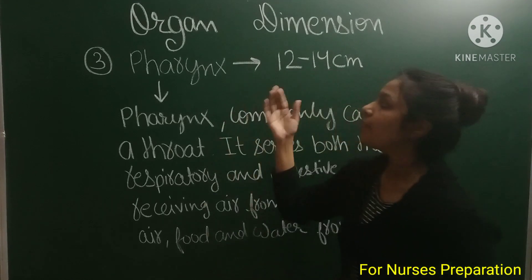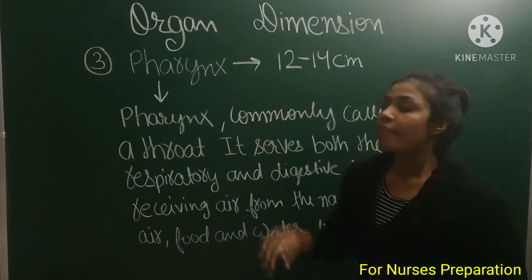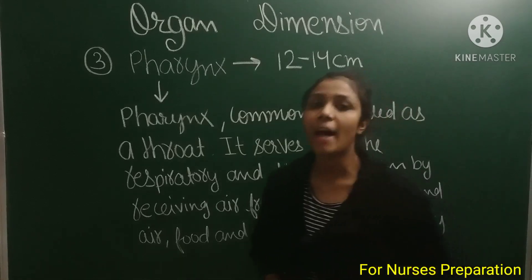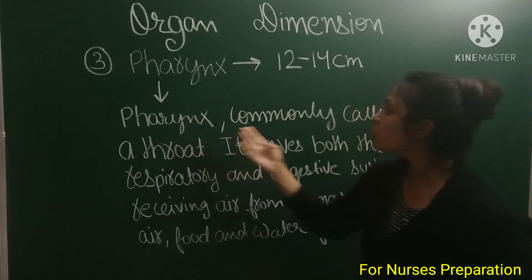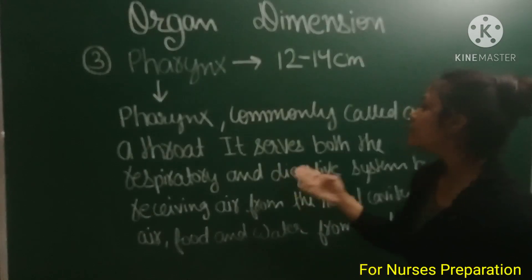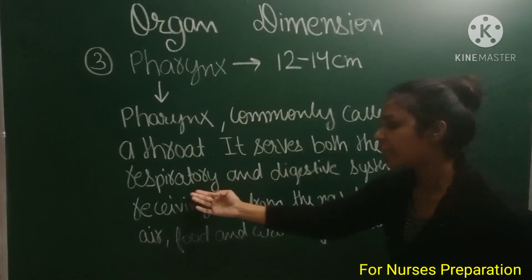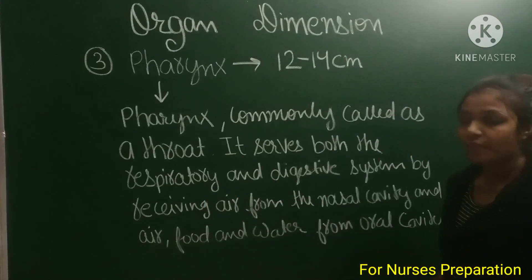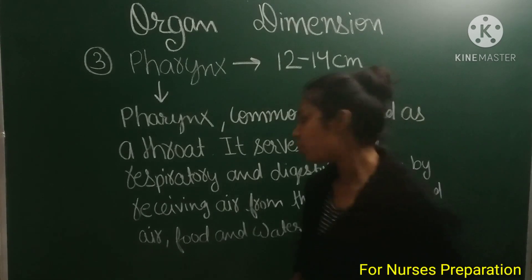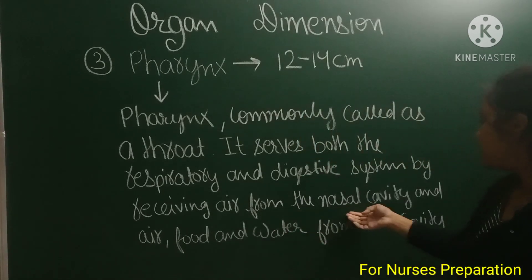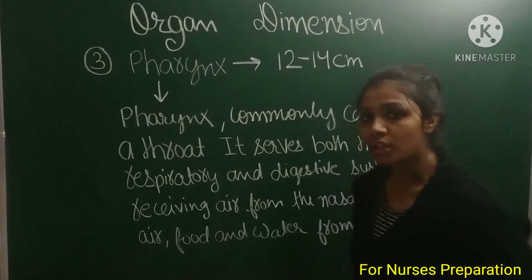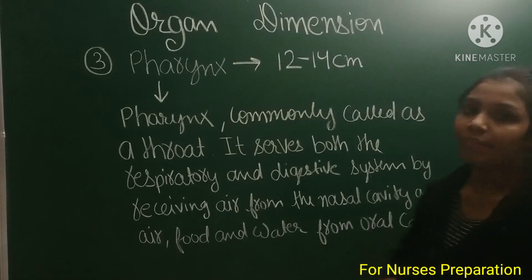Next organ is the pharynx. The pharynx is 12 to 14 centimeters in dimension, and is commonly called the throat. It serves both the respiratory and digestive systems by receiving airflow from the nasal cavity, and food and water from the oral cavity.